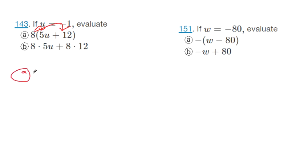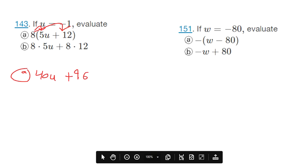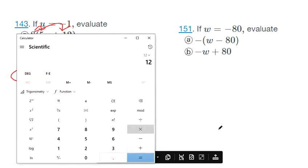So for A, it gives us 40U plus 96. I'm gonna check, 12 times 8, yeah, alright.